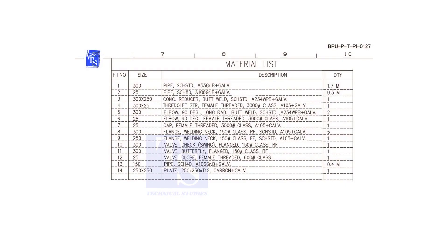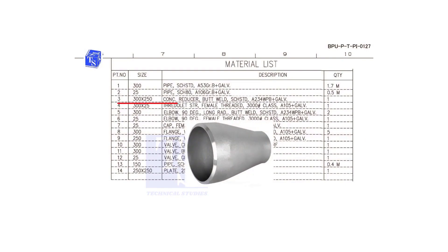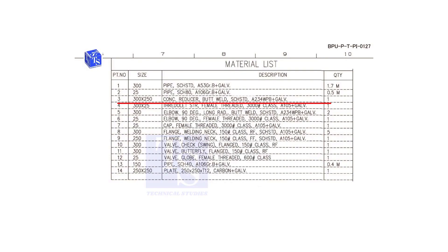Check item number 3. It is a concentric reducer. The size is 300 into 250, and it is butt welded. The schedule is standard.